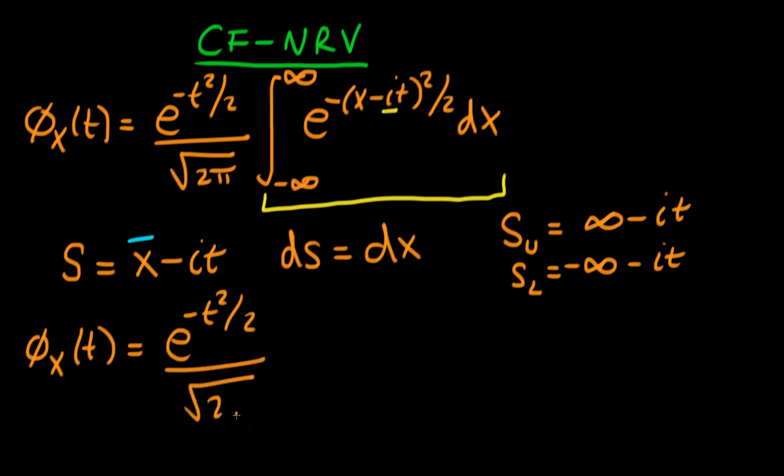Divided by root 2π, integrated from minus infinity minus it to infinity minus it, and we're going to be integrating e to the minus s squared over 2 ds. So this is the integral which we are going to need to evaluate.